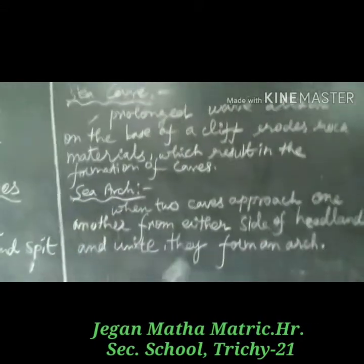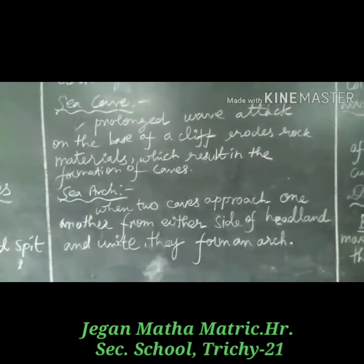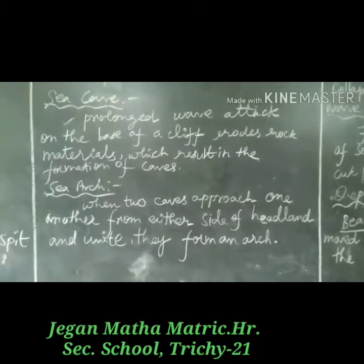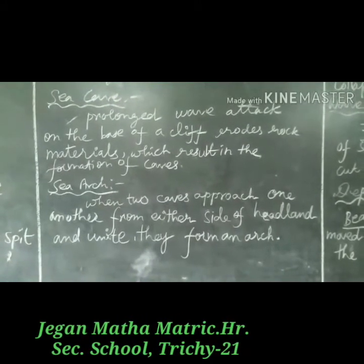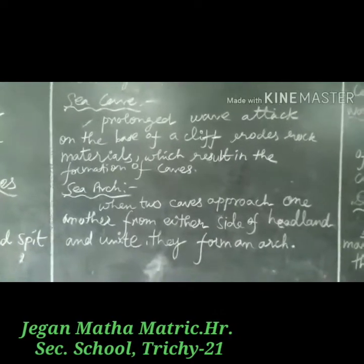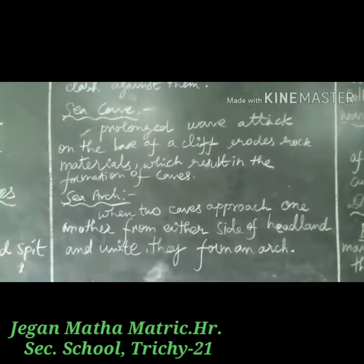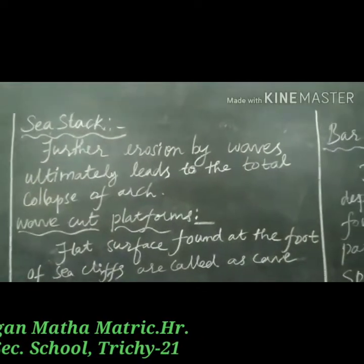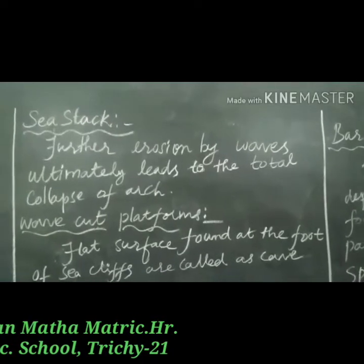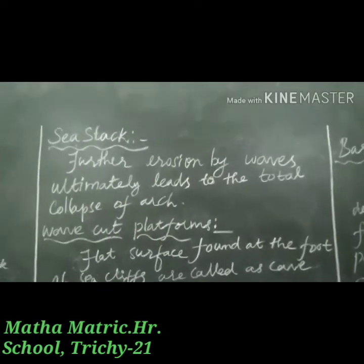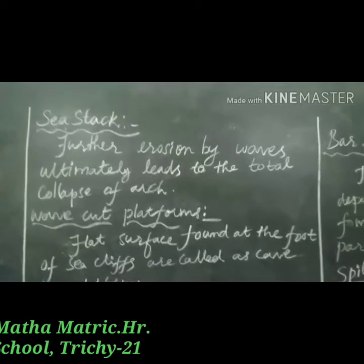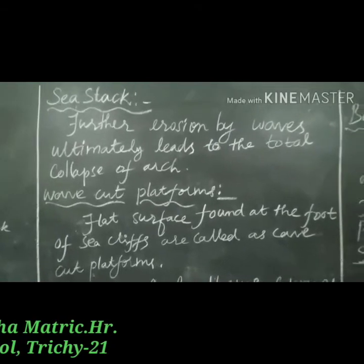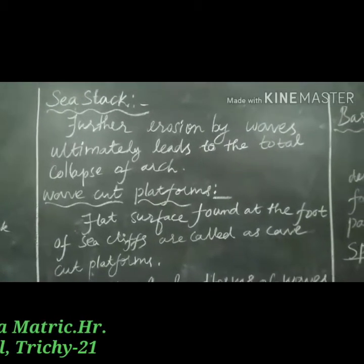Next is sea arch. When two caves approach one another from either side of a headland and unite, they form an arch. Sea stump: faster erosion by waves ultimately leads to the total collapse of the arch. The isolated portion of the headland remains as a pillar of rock known as a stump.